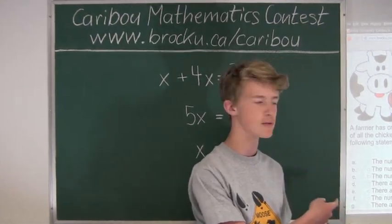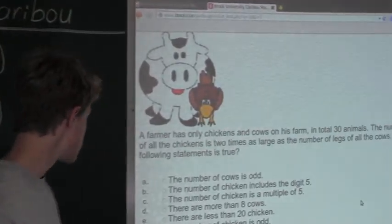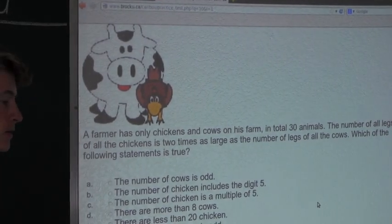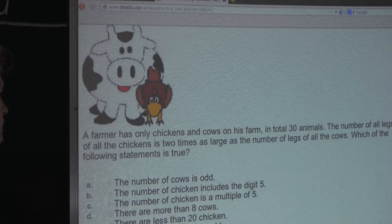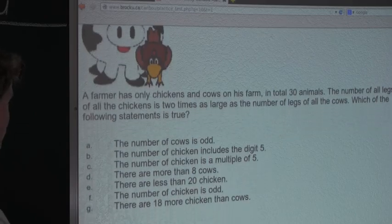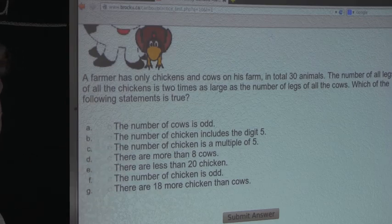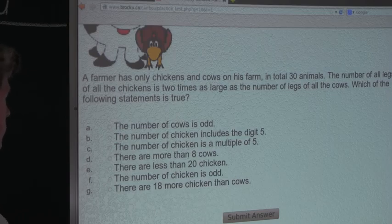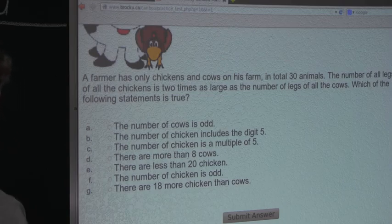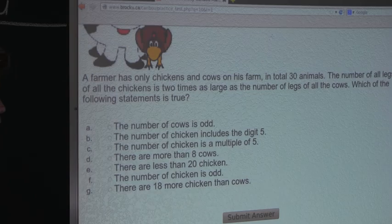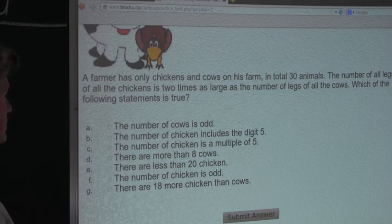So let's look at the options given. Option A states the number of cows is odd. Well this is false because we know that there are six cows. Question B states that the number of chickens includes the digit five. This is false because we know that there are 24 chickens. So two and four. C states the number of chickens is a multiple of five. We know that 24 is not a multiple of five, because 25 is and 20 is.